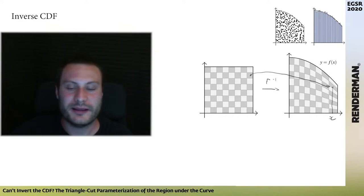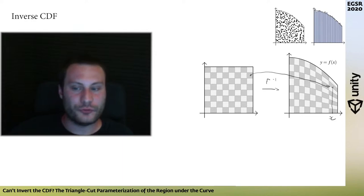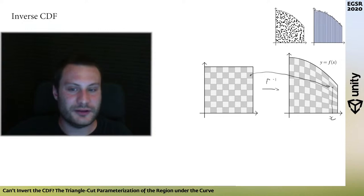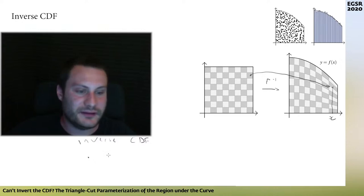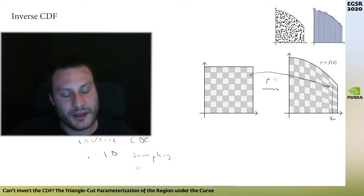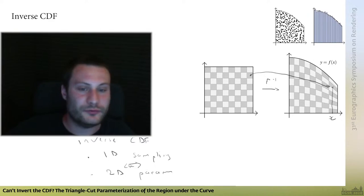This is what we call the fundamental theorem of simulation: sampling uniformly in the region under the curve yields points whose abscissas are valid samples from the density — this is how rejection sampling works. There are really two different intuitions for the inverse CDF method: we can say it is a 1D sampling technique, but equivalently it is also a 2D parameterization. These two views are equivalent — if you can do one, you can do the other.